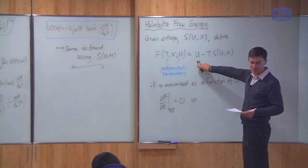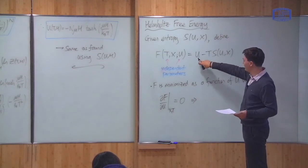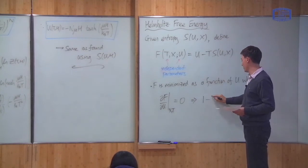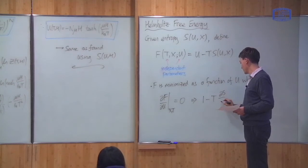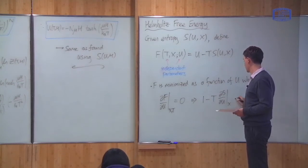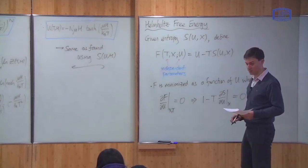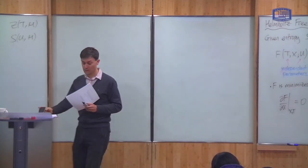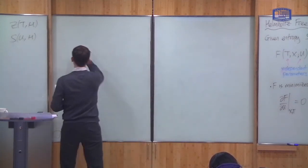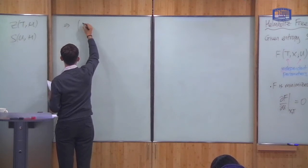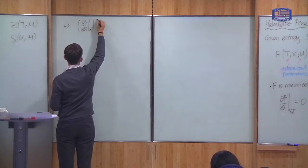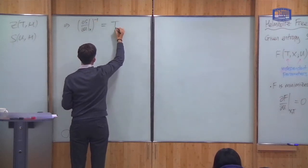The function is quite simple to differentiate with respect to U. If I differentiate this with respect to U, I just get one. T is independent, so I get one minus T times the derivative of S with respect to U. And this thing is equal to zero. I can rearrange this equation to get that (dS/dU at constant X)^(-1) = T.